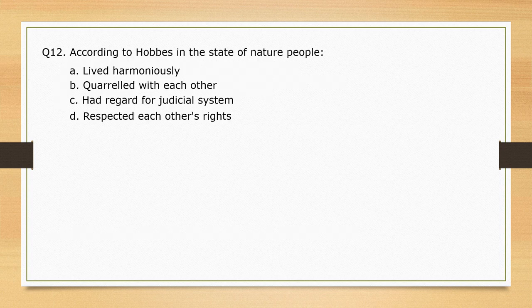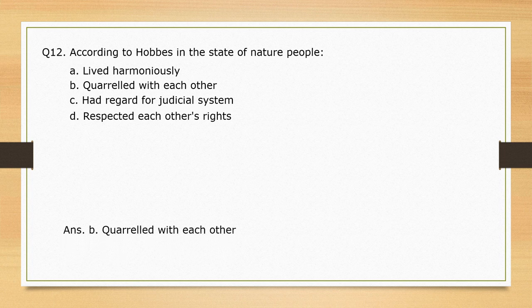According to Hobbes, in the state of nature, people — options are given. The correct option is option B: quarrelled with each other.